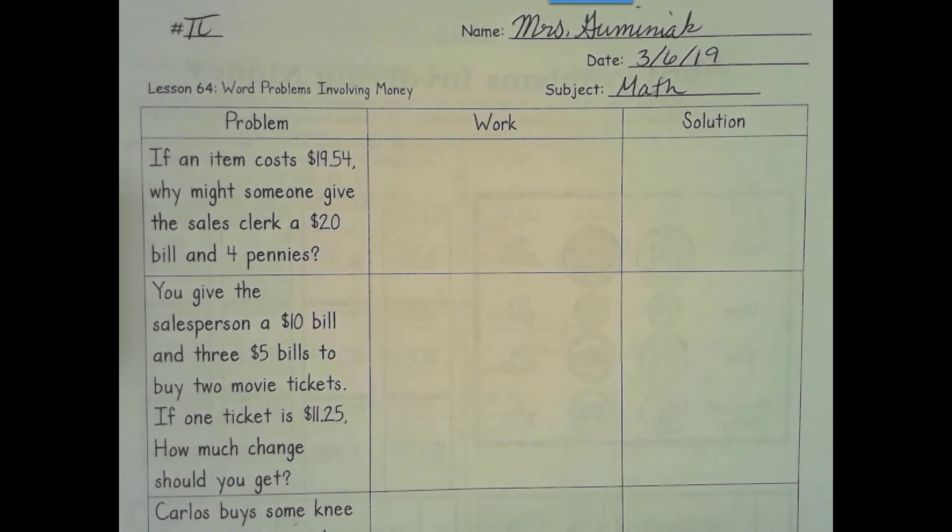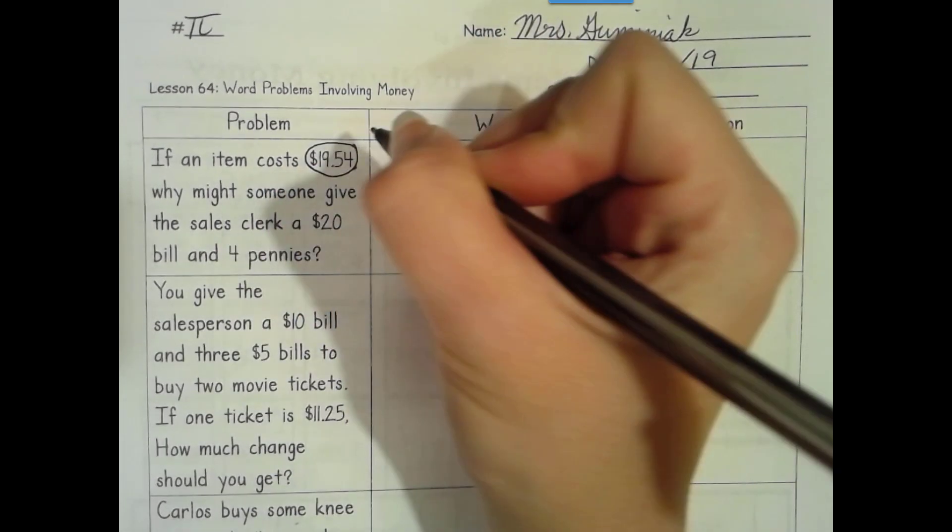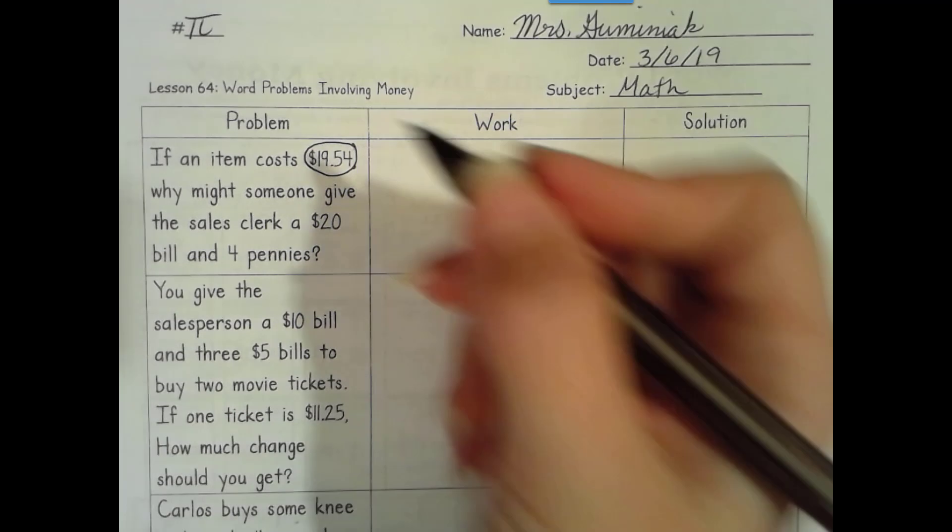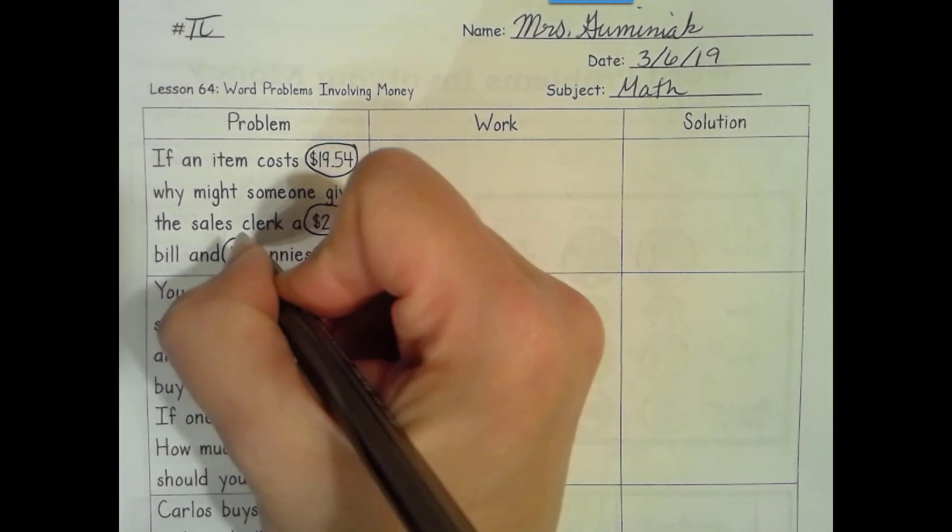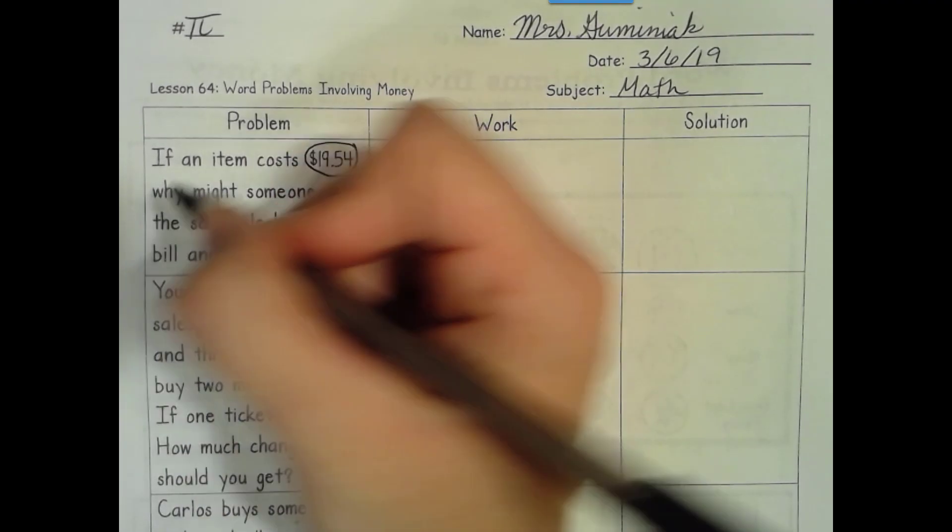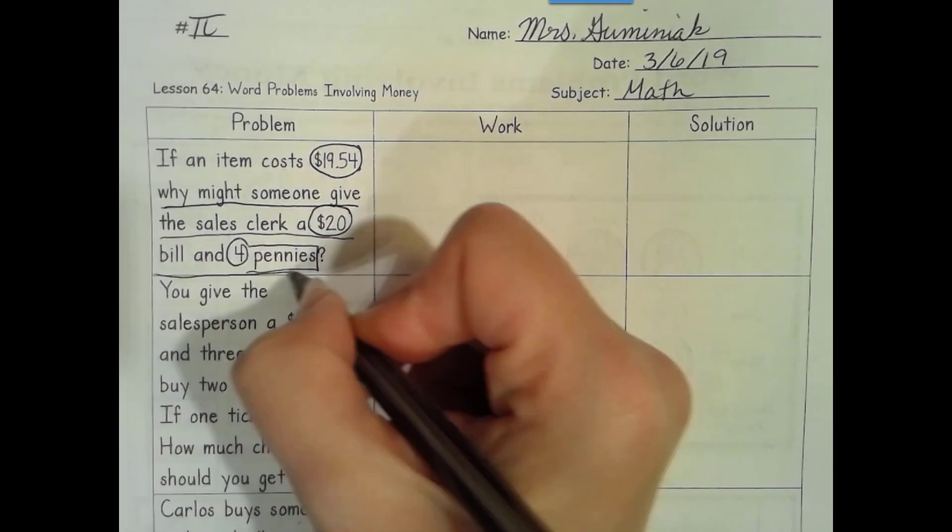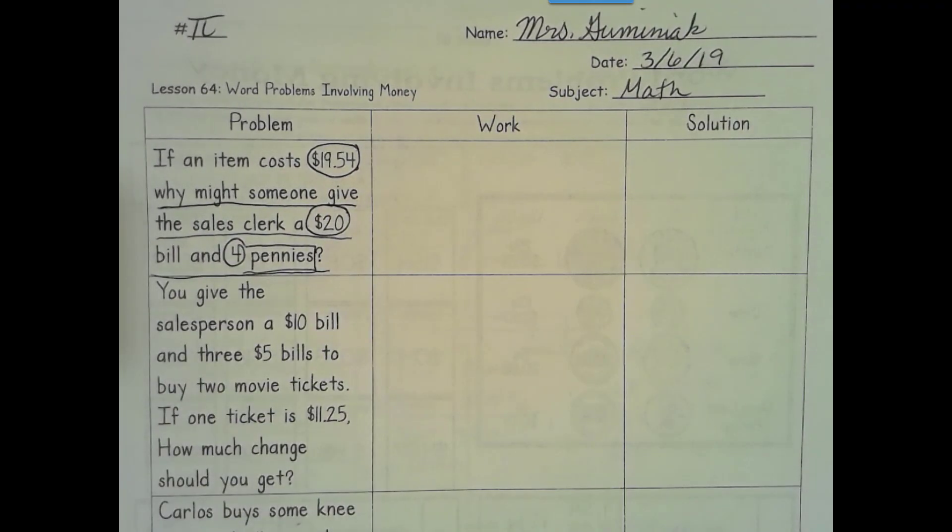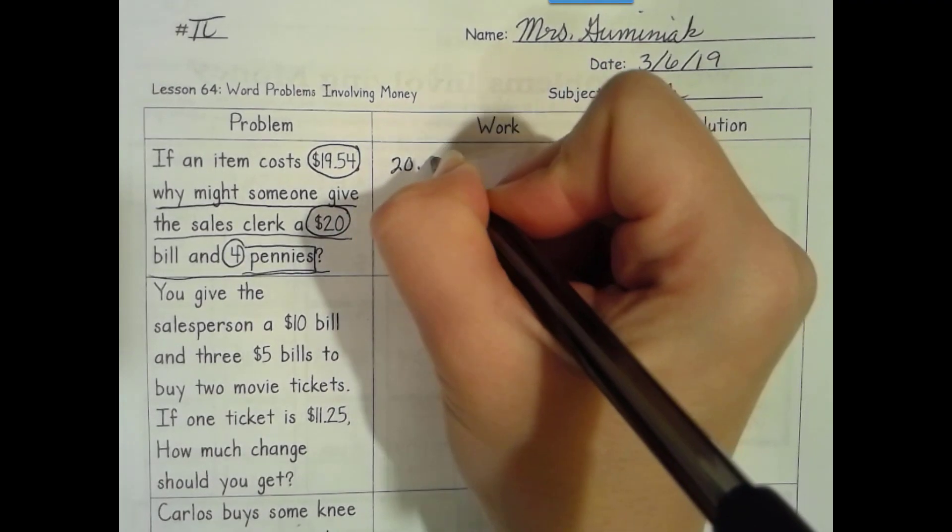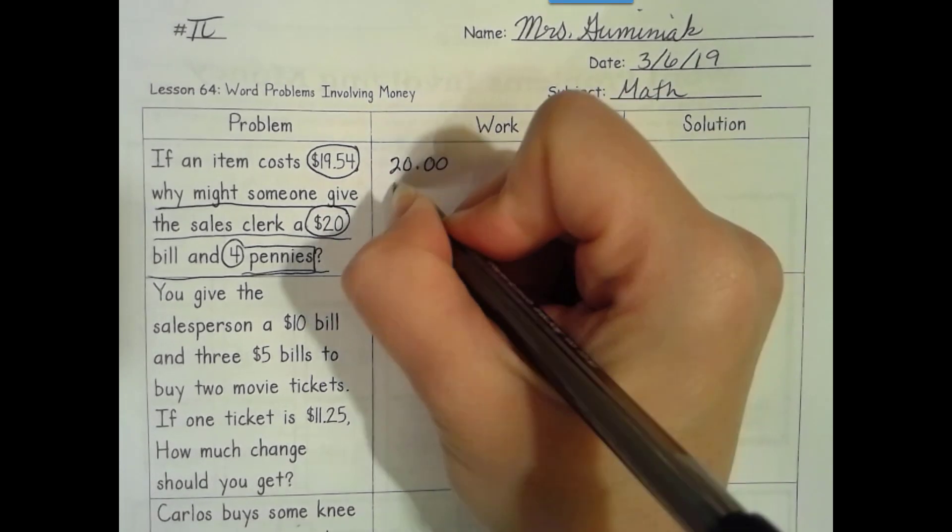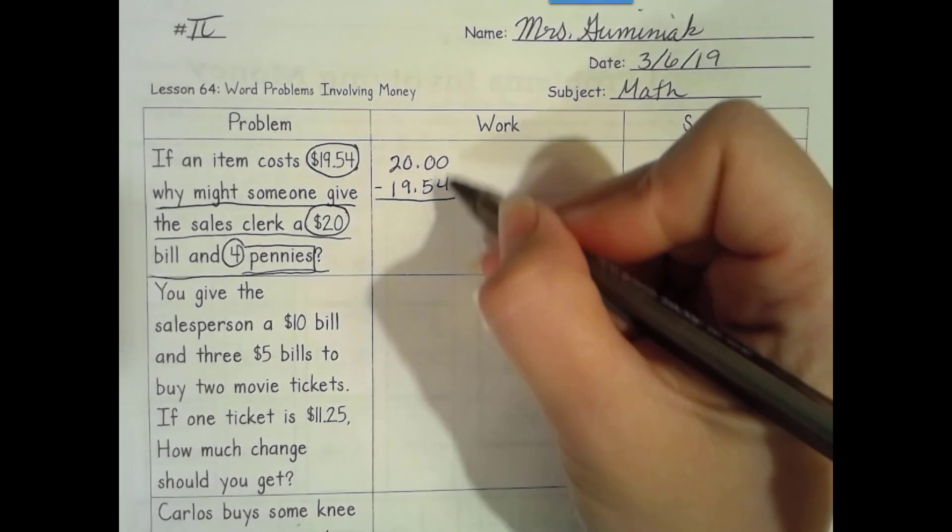Make sure you're writing down the date you are doing these notes, not necessarily the date I am writing. Alright, so we have some word problems here. If an item costs $19.54, why might someone give a sales clerk a $20 bill and four pennies? This is an interesting question. Why might they give them four pennies? Well, let's see. If you just give the $20 bill, let's see what change you would get.